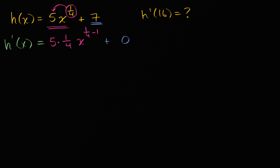Now we just have to simplify this. So h'(x) equals 5/4 x to the, what's 1/4 minus 1? Well, that's negative 3/4. That's 1/4 minus 4/4, or negative 3/4. So h'(x) = 5/4 x^(-3/4) plus zero, so we don't have to write that.